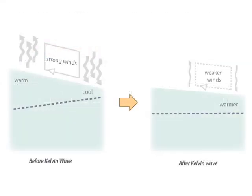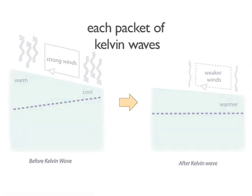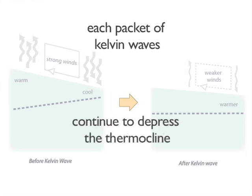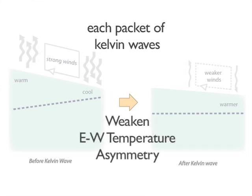Packets of Kelvin waves make the 20 degrees Celsius thermocline deepen, resulting in a warmer upwelled eastern equatorial region. The warmer water breaks down the east-west ocean temperature asymmetry and the atmospheric pressure asymmetry, resulting in weaker winds flowing west along the equator. Up to four or five bursts or packets of Kelvin waves travel along the equator over the course of three to four months. Each burst continues to depress the 20 degrees Celsius thermocline in the eastern Pacific and weaken the east-west temperature and atmospheric pressure asymmetry.